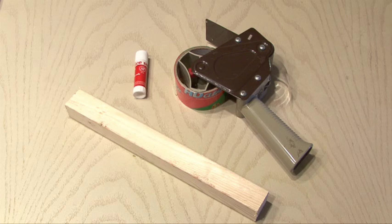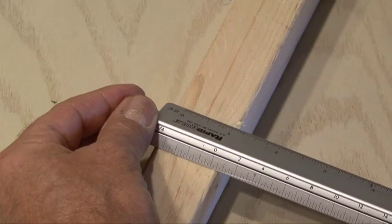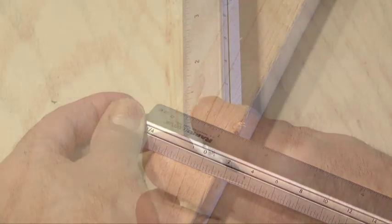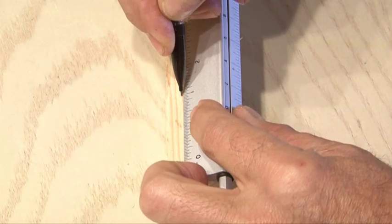All you need is a piece of wood, some clear packing tape, and a glue stick. The first step is to get an exact measurement of the width of your wood, because we're going to be making eight square blocks all the same size.